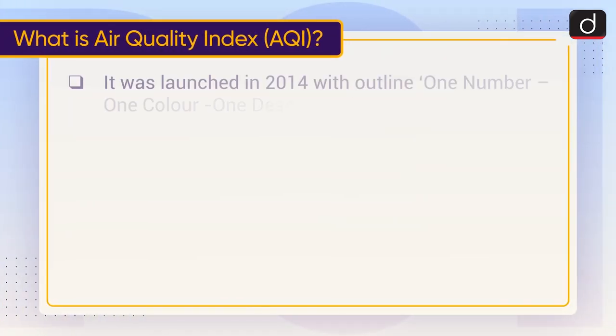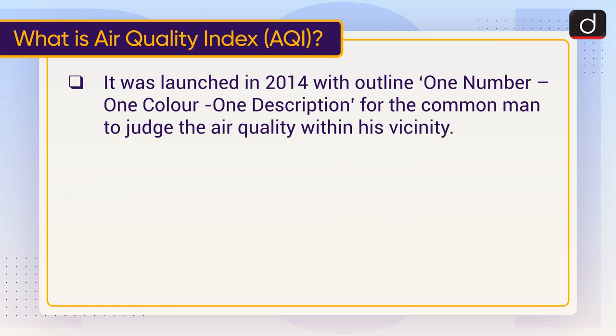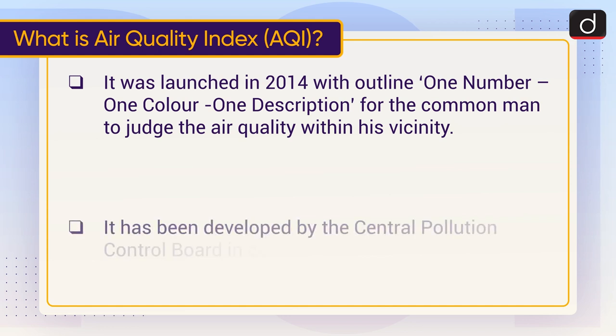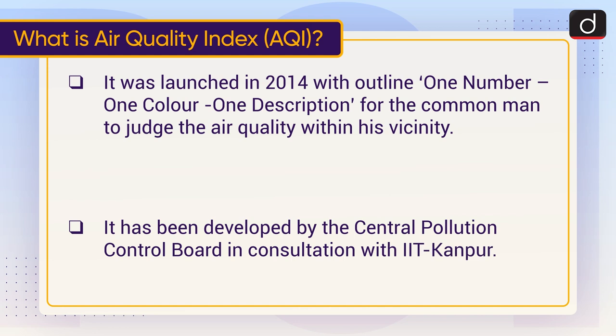AQI was launched in 2014 with the outline: one number, one color, one description — for the common man to judge the air quality within his vicinity. It has been developed by the Central Pollution Control Board in consultation with IIT Kanpur.